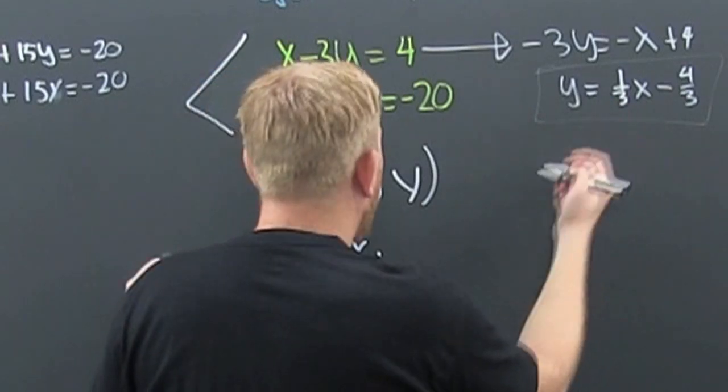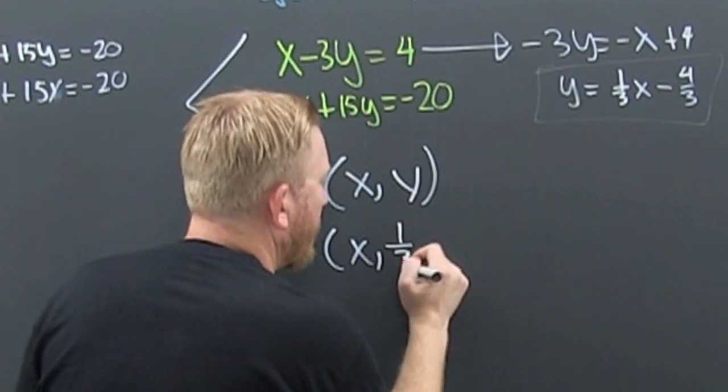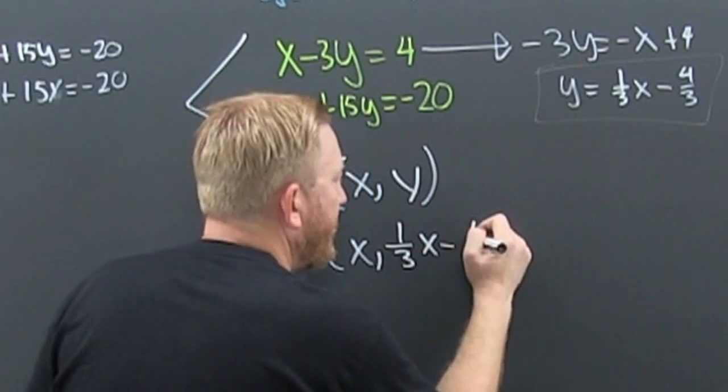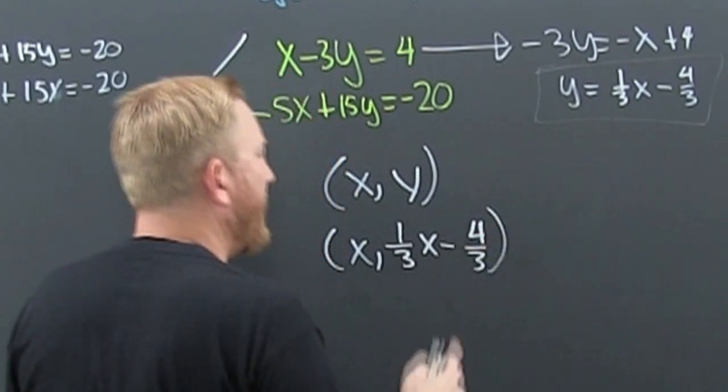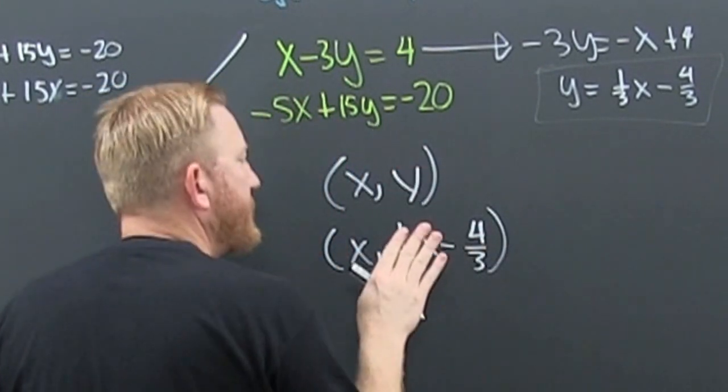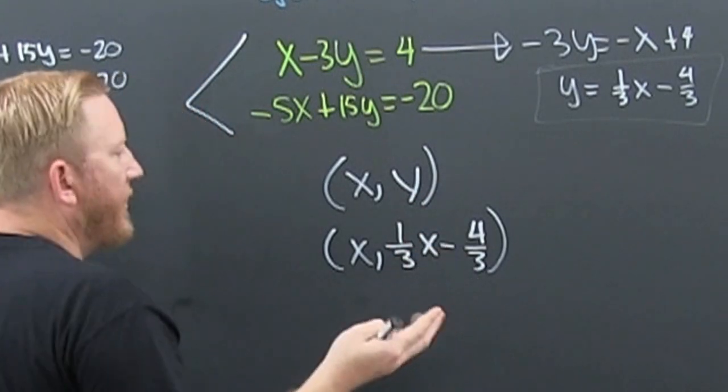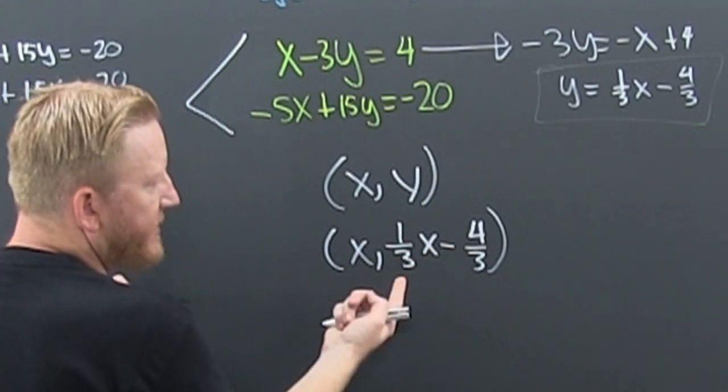So instead of writing my y, I'm going to do the incognito, that'll be neat. One third x minus four thirds. I heard I can find all the solutions to the system like here.